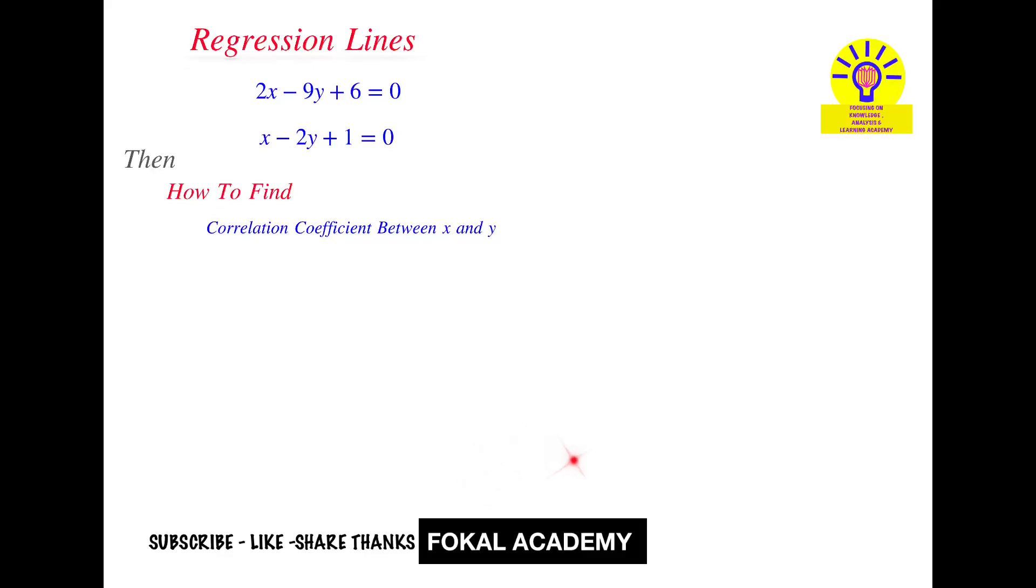Hi everyone, welcome to Focal Academy. In this problem, two regression lines are given: 2x minus 9y plus 6 equals 0, one regression line, and another is x minus 2y plus 1 equals 0. Then how can you find the correlation coefficient between x and y? This is the problem.